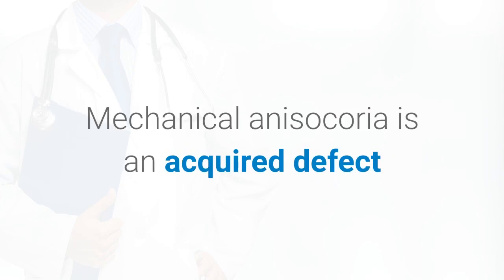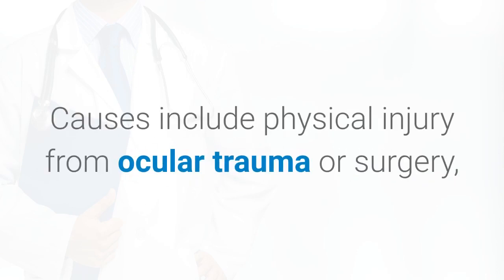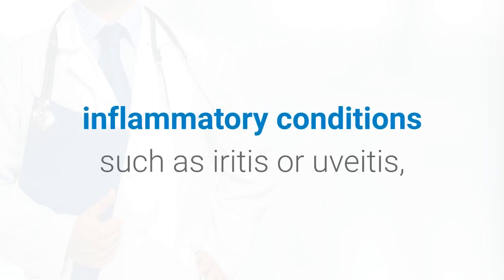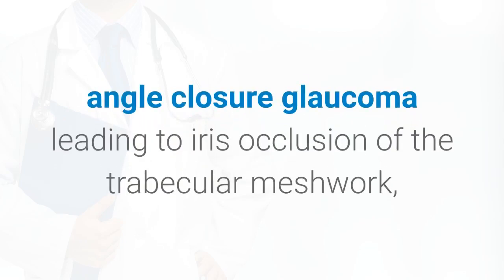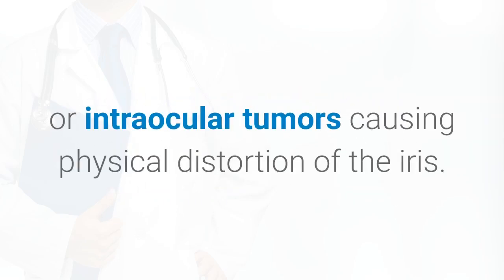Mechanical anisocoria is an acquired defect that results from damage to the iris or its supporting structures. Causes include physical injury from ocular trauma or surgery, inflammatory conditions such as iritis or uveitis, angle-closure glaucoma leading to iris occlusion of the trabecular meshwork, or intraocular tumors causing physical distortion of the iris.